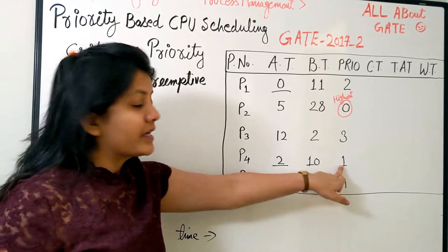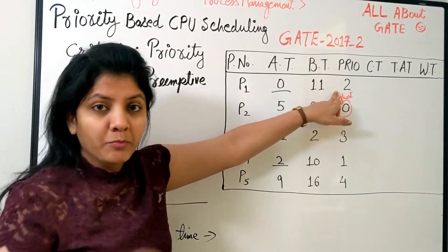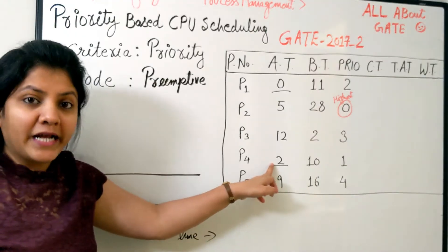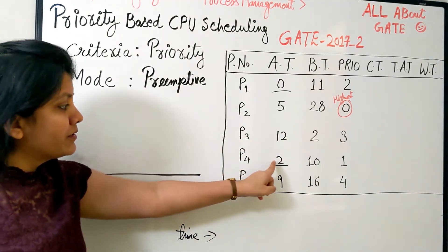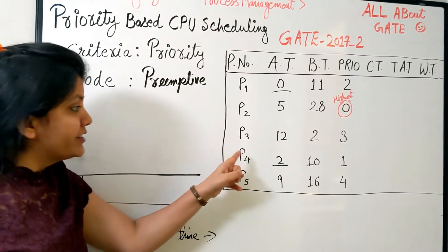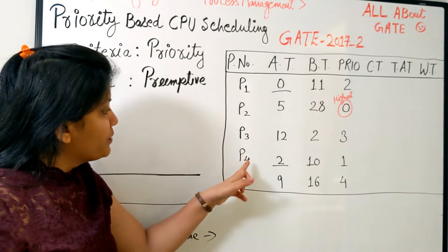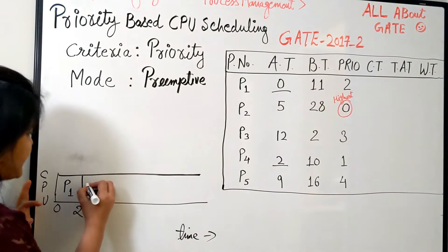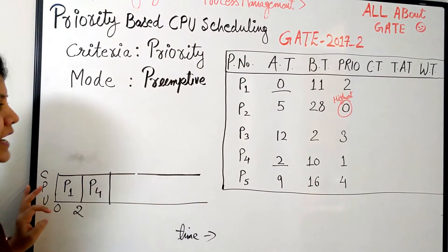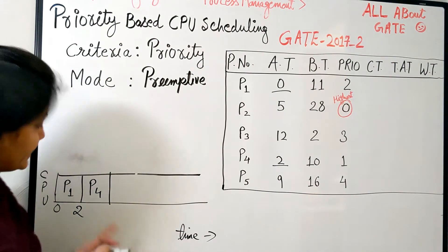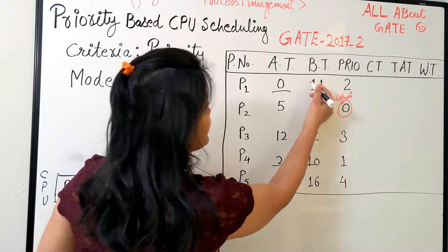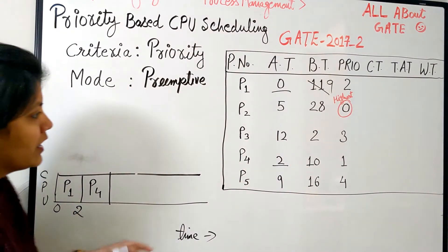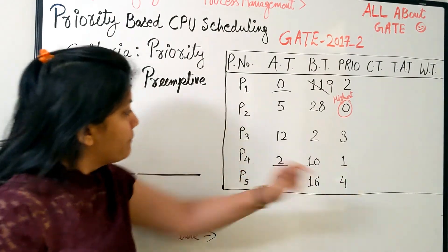But mind it, while P1 is running, if any other process comes into the system which is higher in priority, this might get preempted. Let's see which is the next process arriving. The next one is coming at time 2, which is P4, having priority 1, which is quite higher than the priority of P1. That means we will run P1 from 0 to 2 till P4 arrives. The moment P4 arrives in the ready queue, the CPU scheduler will see that P4 is higher than P1, so it should preempt it.